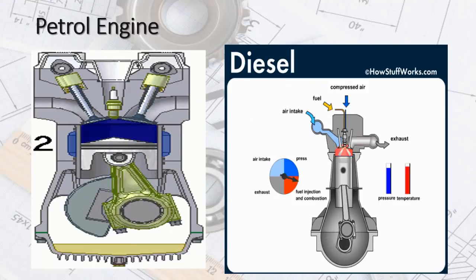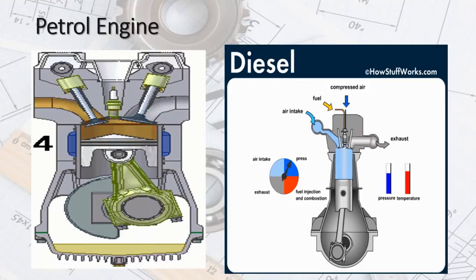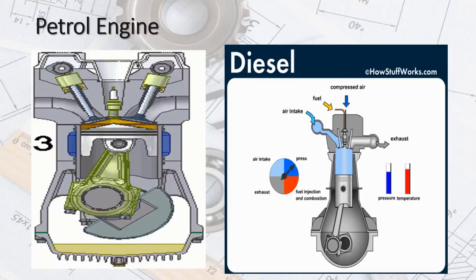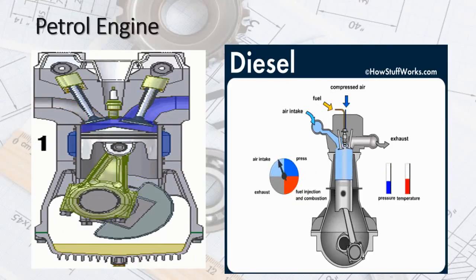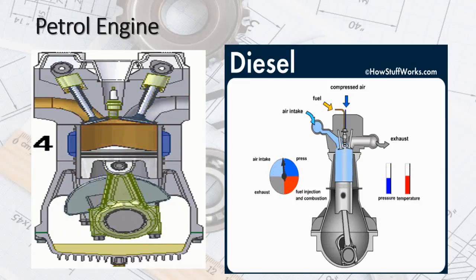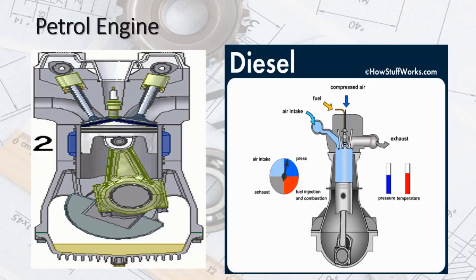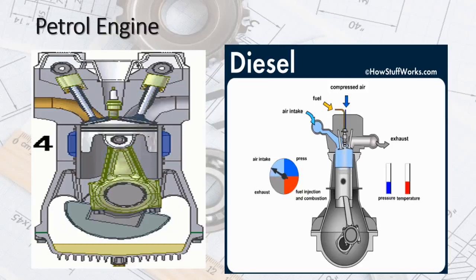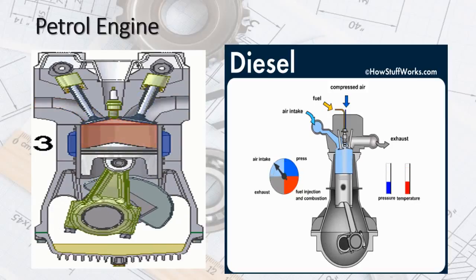There are two kinds of internal combustion engines currently in production: the spark ignition gasoline engine and the compression ignition diesel engine. Most of these are four-stroke cycle engines, meaning four piston strokes are needed to complete the cycle. The cycle includes four distinct processes: intake, compression, combustion and power stroke, and exhaust.